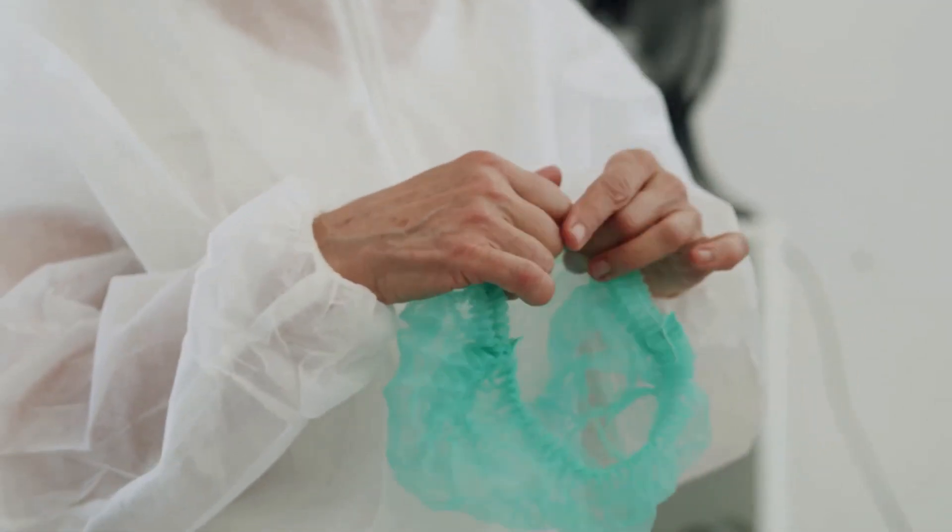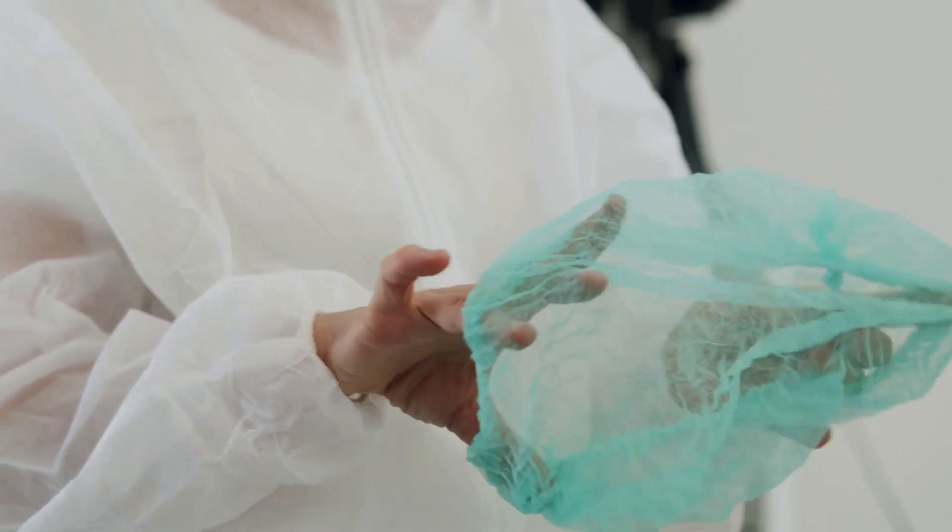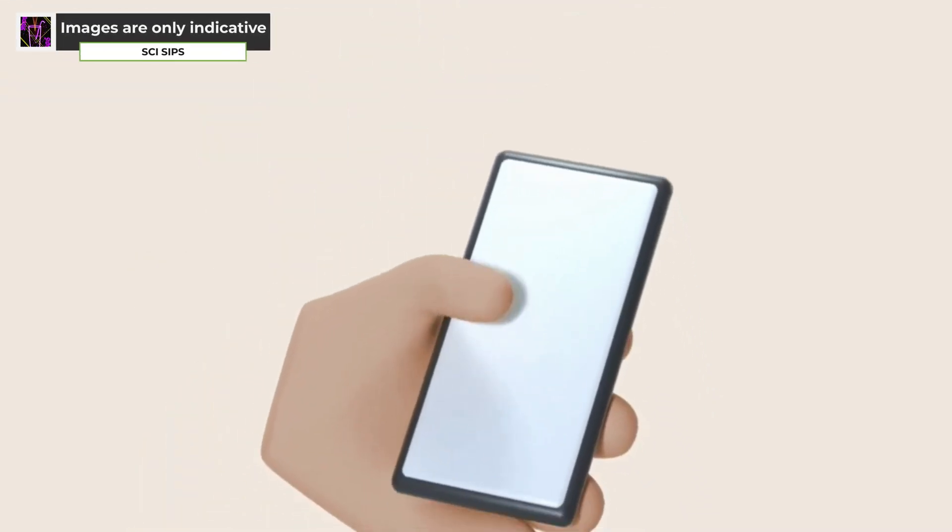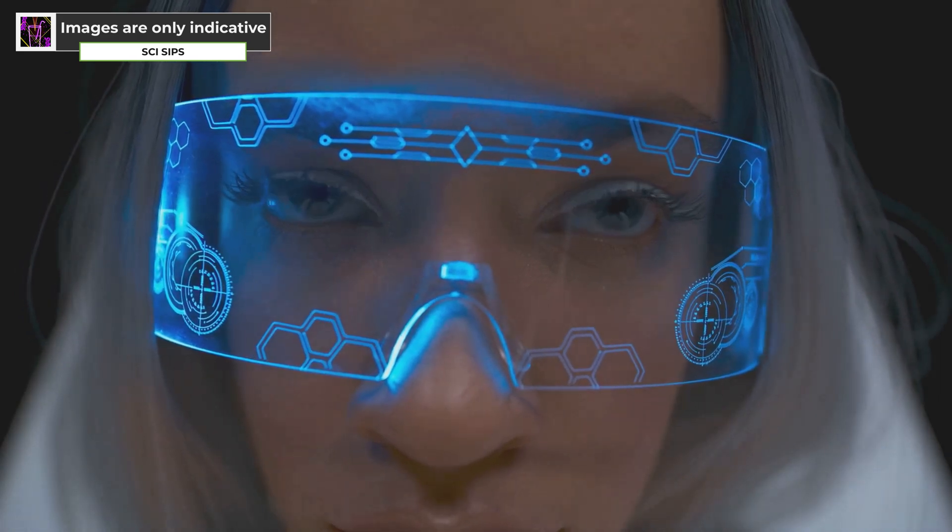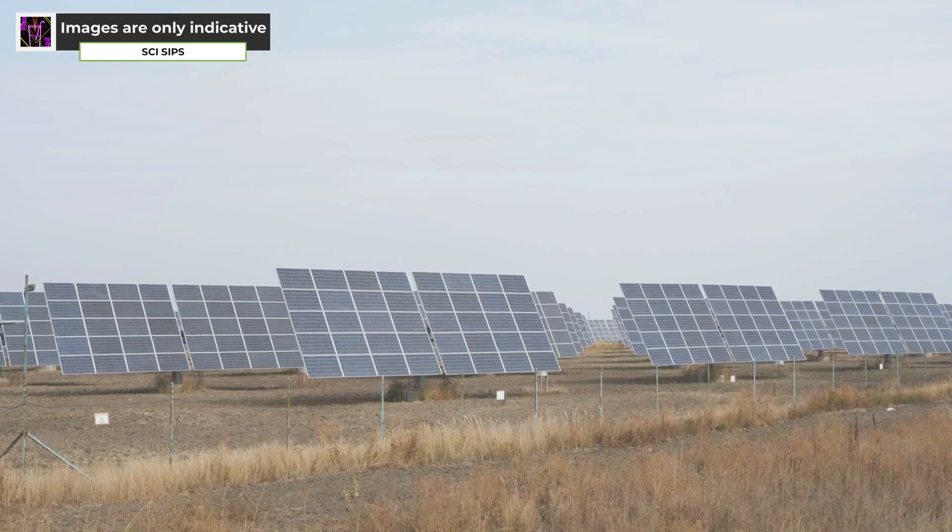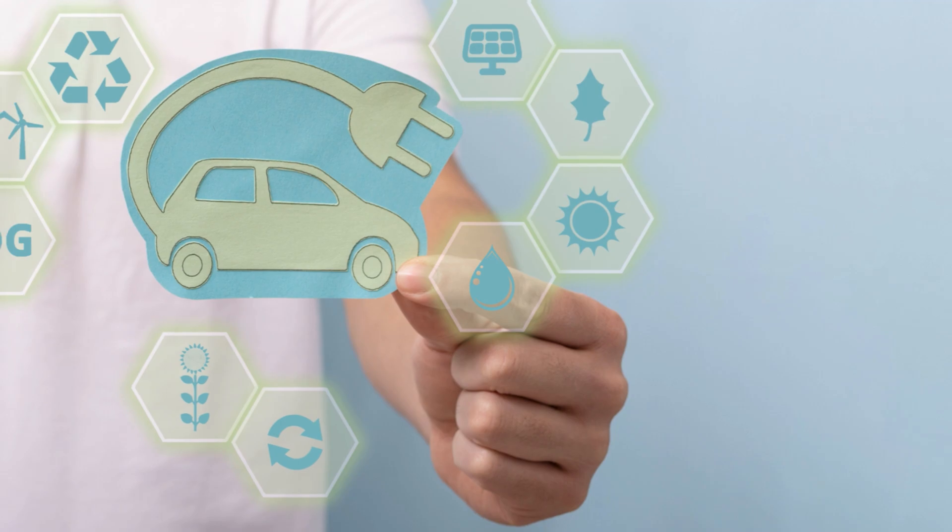In the realm of electronics, borophene's exceptional conductivity and flexibility make it ideal for flexible and transparent electronics. Imagine foldable phones that transform into tablets, or wearable displays that blend seamlessly with clothing. Borophene could also revolutionize energy storage, leading to faster charging and longer-lasting batteries for electric vehicles and portable electronics.